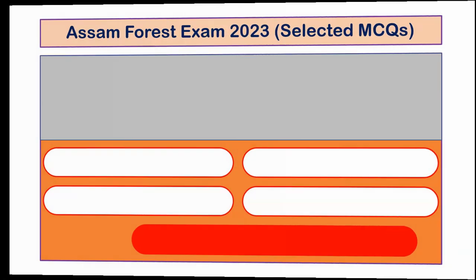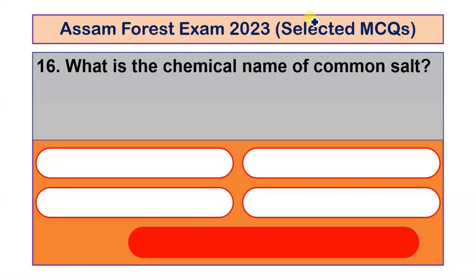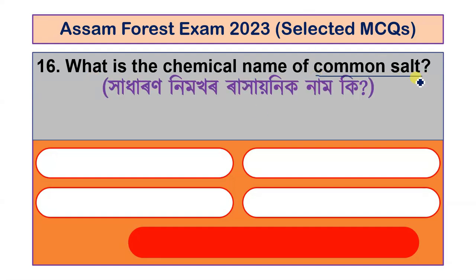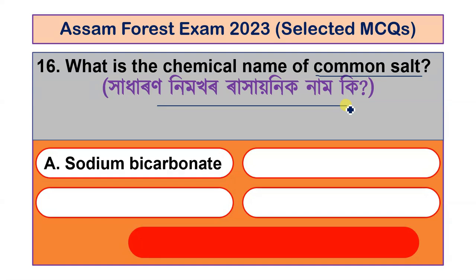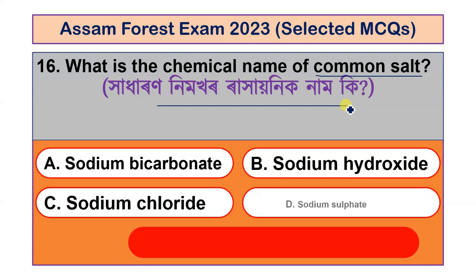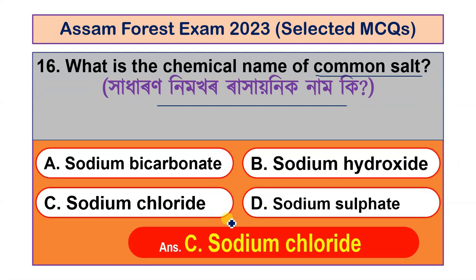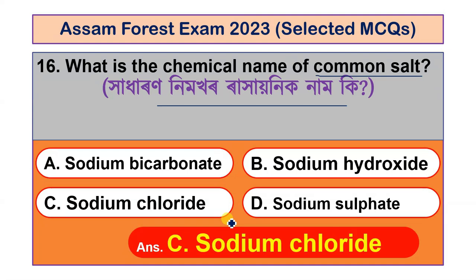Question number 16: What is the chemical name of common salt? Options are sodium bicarbonate, sodium hydroxide, sodium chloride and sodium sulphate. The correct answer is option C, sodium chloride.